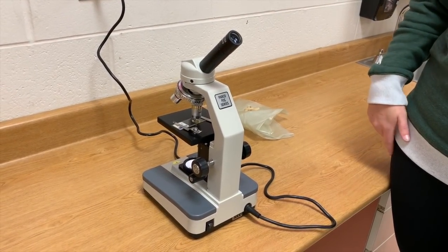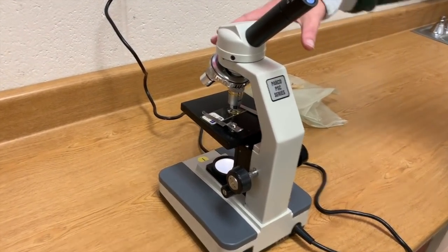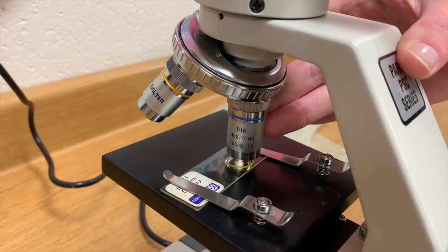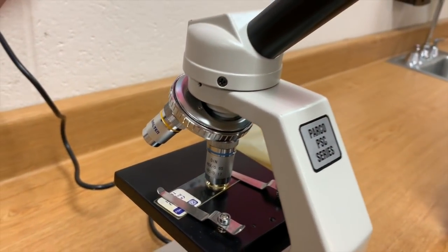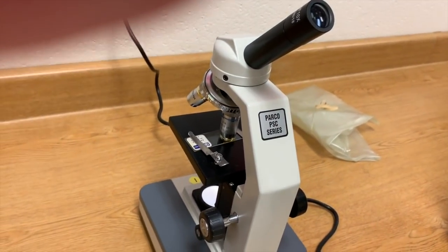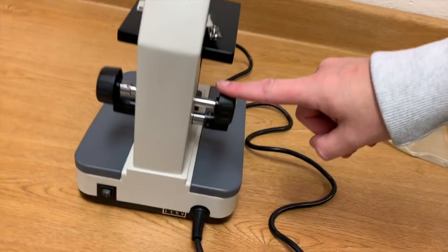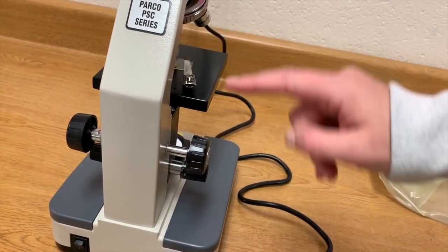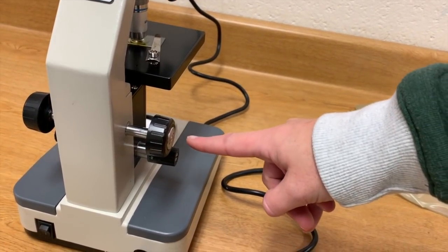After viewing on medium power, we're going to flip to high power. So moving that objective until it clicks into place, we're going to place our eye on the eyepiece, but it's really important to remember that we're never going to use the coarse adjuster on this power because this stage could potentially hit this objective. So we're only going to use the fine adjuster on this power, on the high power.